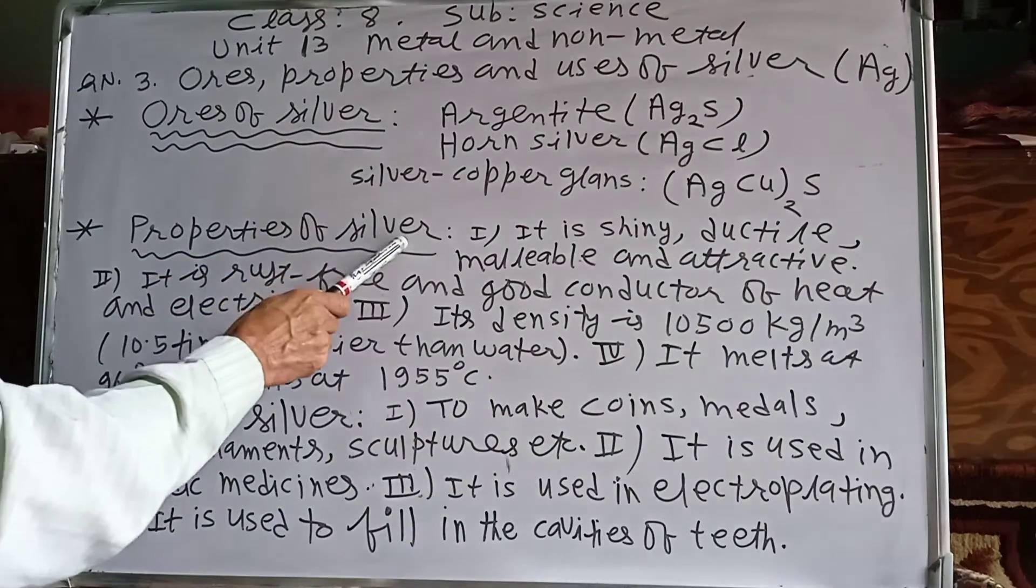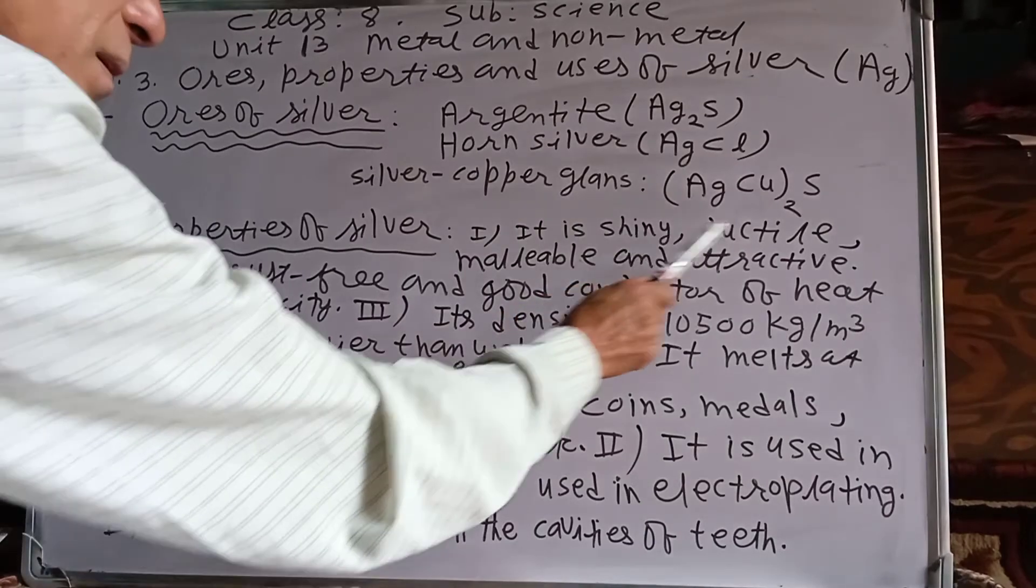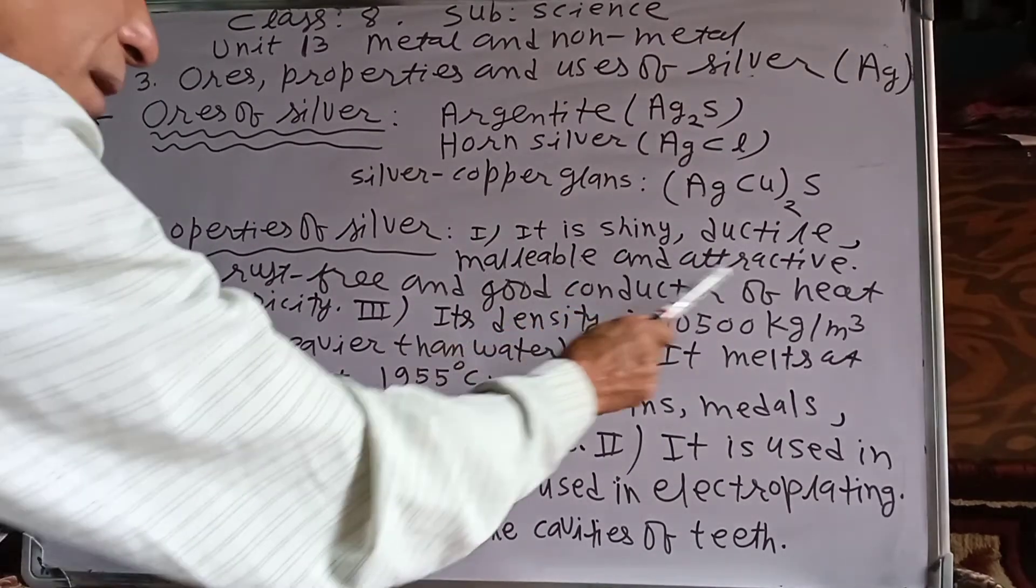Properties of silver. 1. It is shiny, ductile, malleable and attractive.